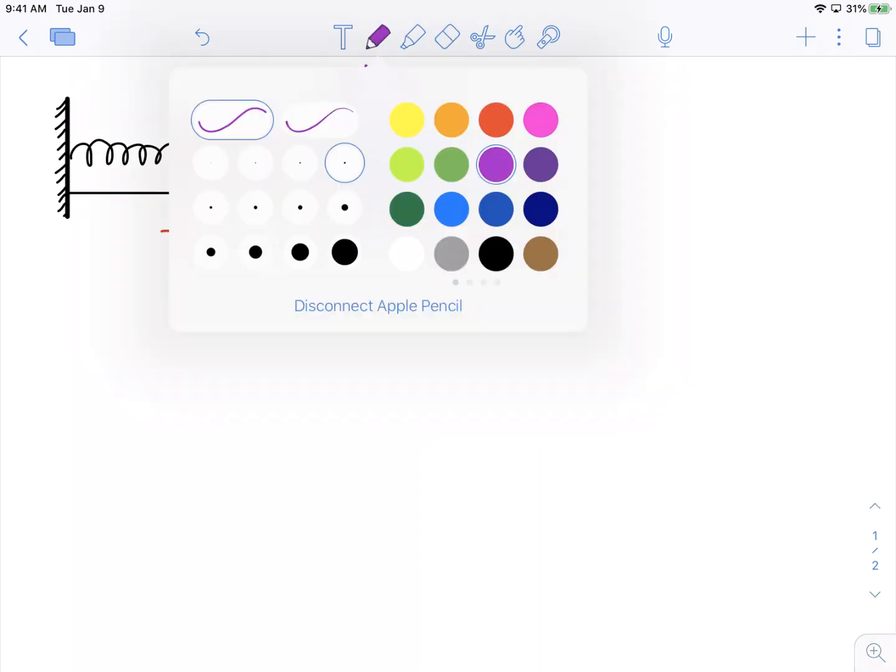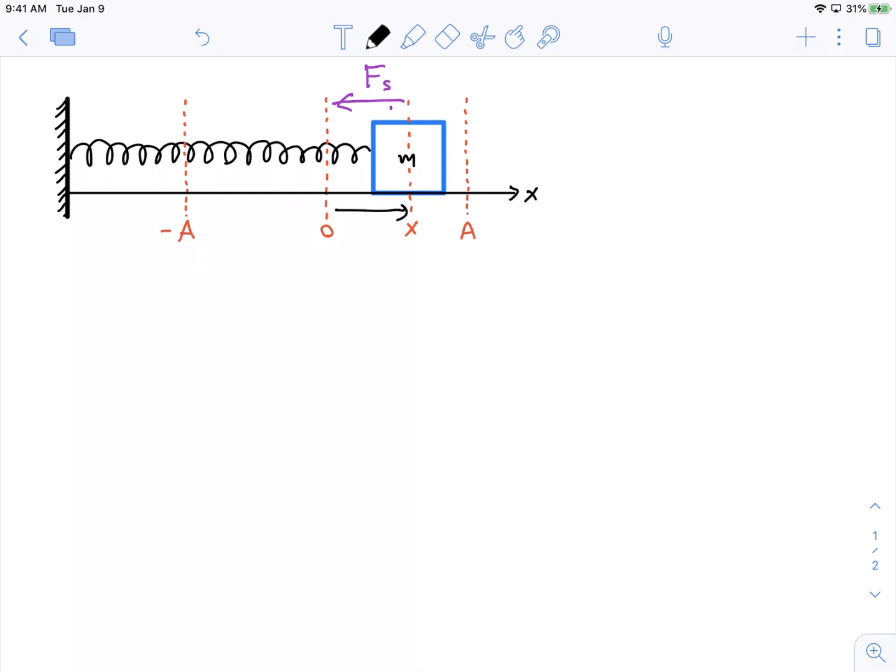So what is the equation for this force? Well it's f spring is equal to negative k times x. What is k? k is called the spring constant. It is a macroscopic quantity of this spring. It has to do with how this spring is built, how many coils it has, the material it's made of, how long it is.